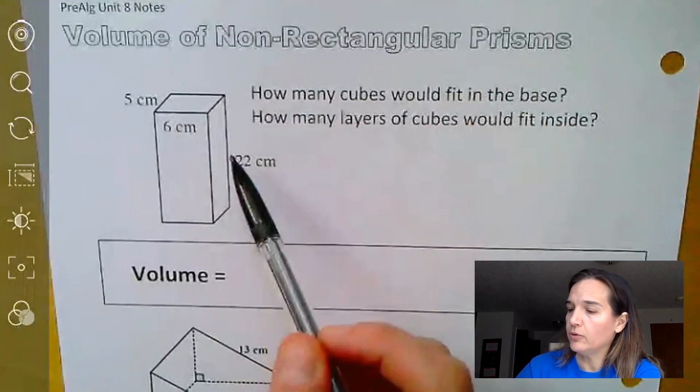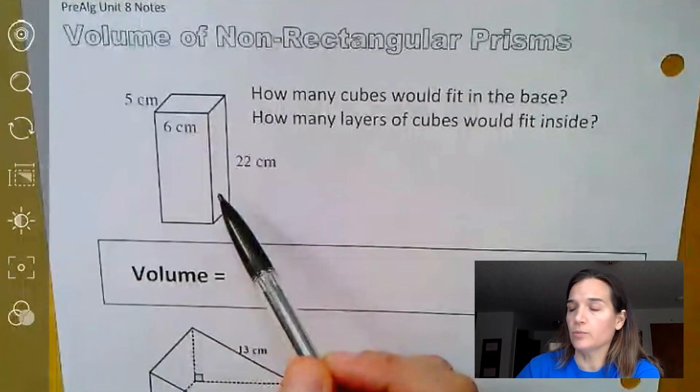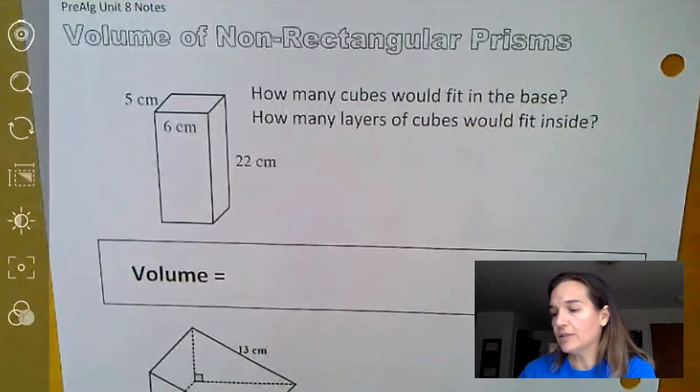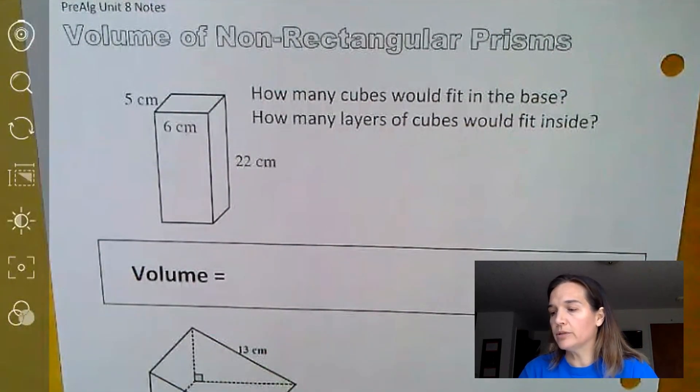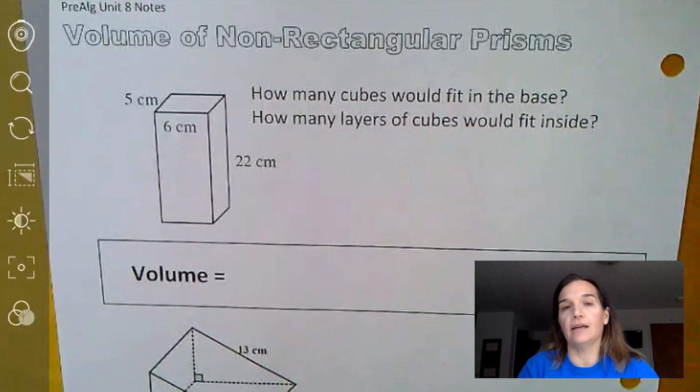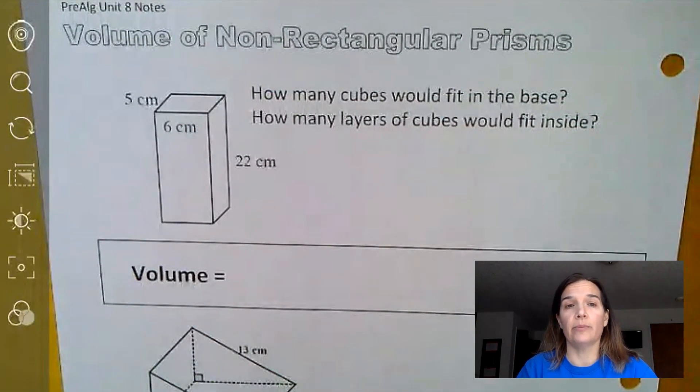So to start with, if we're looking for the volume inside of this prism here, what we need to know is that we want to know how many cubes would fit inside of that shape. That's the volume, the amount of space inside.